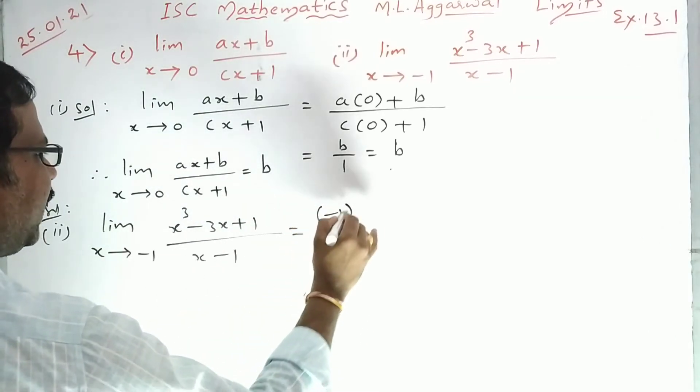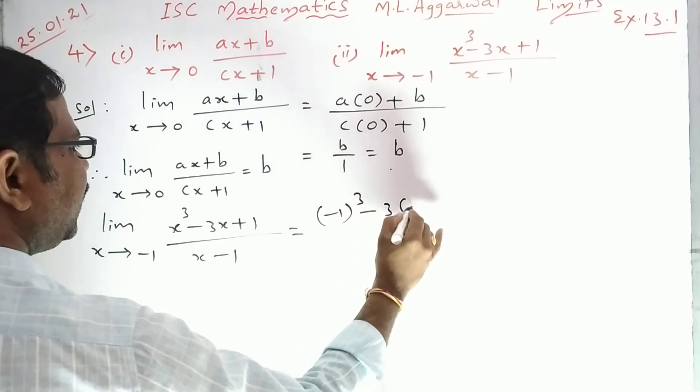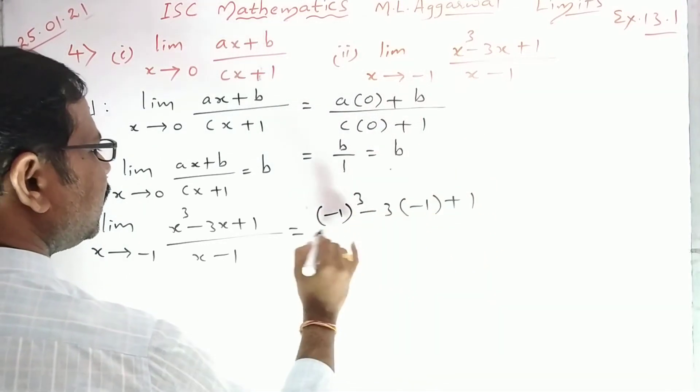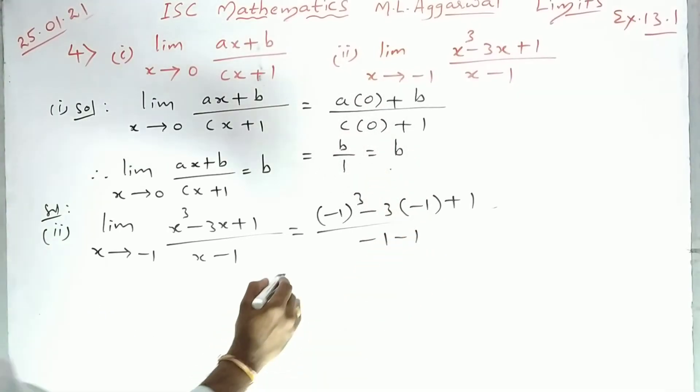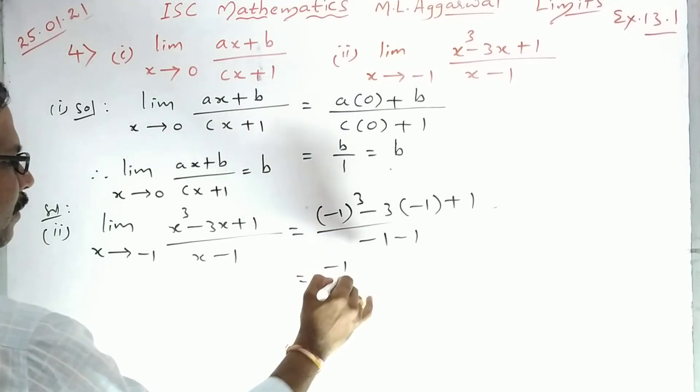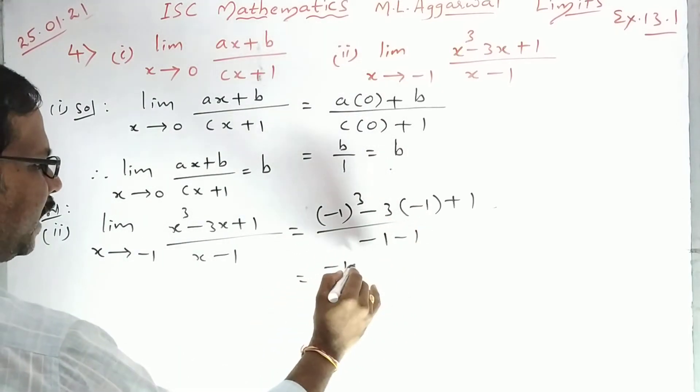(-1)³ - 3 into (-1) + 1 upon -1 minus 1, right. So you will get (-1)³ means -1, minus into minus is -1, then -1 + 3 + 1 upon -1 minus 1 which is -2.